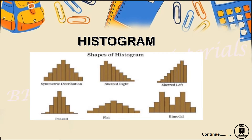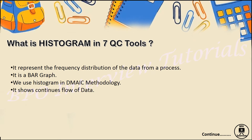Let's start today's topic on histogram. Histogram is one of the seven quality tools. Our main agenda is to clear our interview, so I'm going through the theoretical portion of the histogram and also giving an example. We will also see the difference between bar graph and histogram. Basically, histogram is a representation of data in a graphical form where the data is represented in a continuous method. Histogram is used in the DMAIC methodology, which means it is used in Six Sigma.